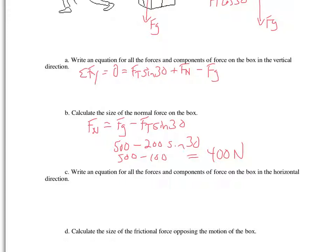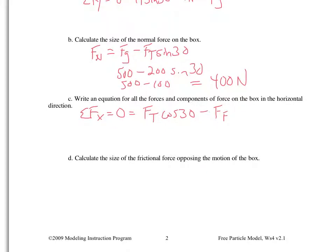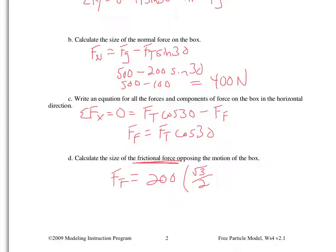Next, I write the equation for all horizontal forces: zero equals Ft cosine 30 minus Ff. I just called the direction of motion positive. Rearranging: Ff equals Ft cosine 30. To solve for friction: Ff equals 200 times cosine 30. Cosine of 30 is the square root of 3 over 2, which is about 0.866, so you'd calculate 200 times that in your calculator to get the frictional force.